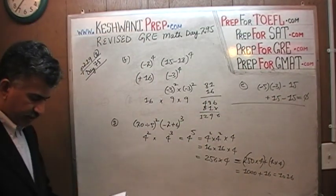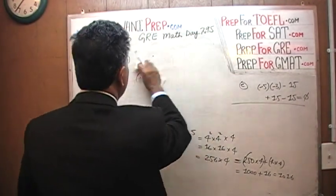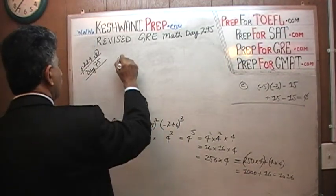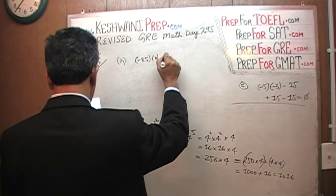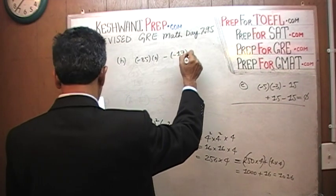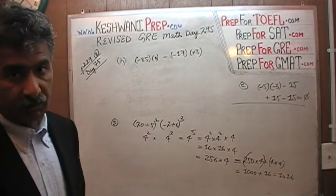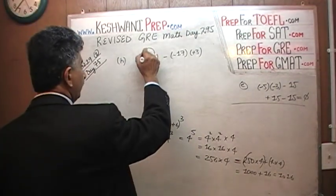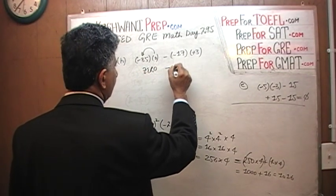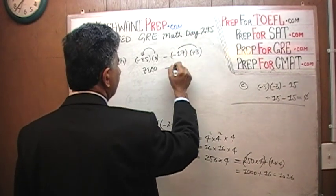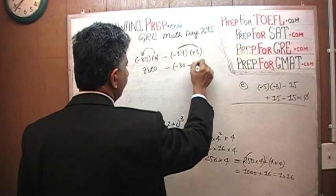The very last one H. Negative 85 times 0 minus negative 17 times positive 3. Negative 85 times 0, 0 times anything is 0. So this is just 0 minus negative 17 times 3. 17 times 3 is going to be 10 times 3 is 30 and then 7 times 3 is 21 which is 51, which is positive 51.